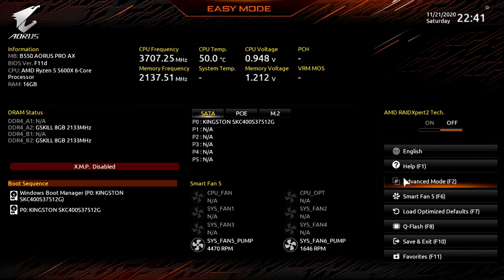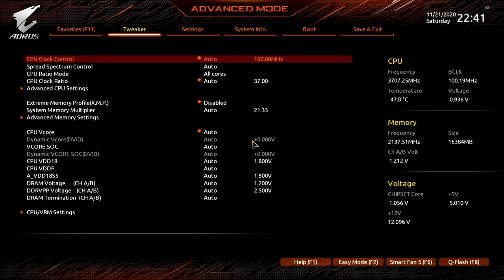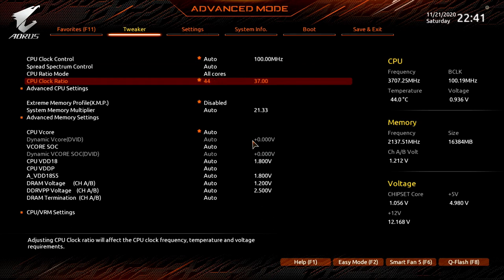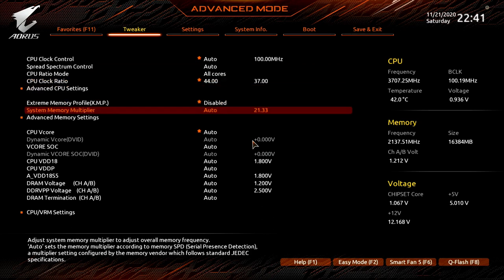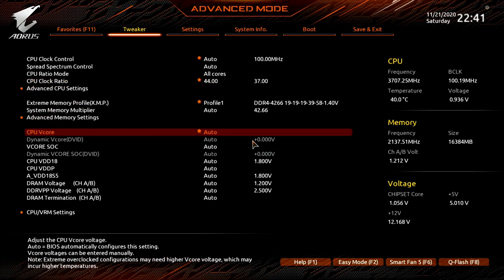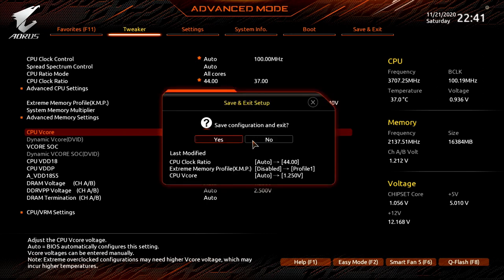In addition to overclocking the CPU to 4.4 GHz, we also enable XMP, but leave Infinity Fabric and the memory controller to default operation. So we are running asynchronous mode. Also, this is the highest setting that is stable for Prime95 with AVX. Upon entering the BIOS, change to the advanced mode view. Set CPU clock ratio to 44, set extreme memory profile to profile 1, set CPU vCore to 1.25V, then save and exit the BIOS.